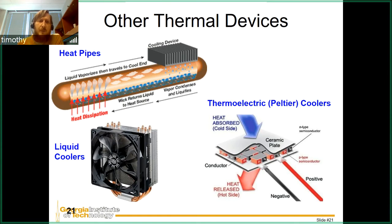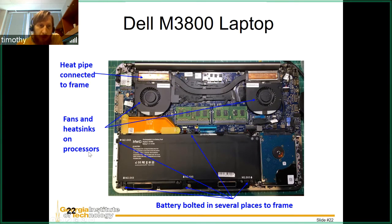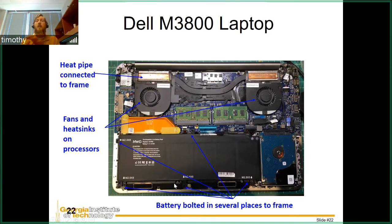Here's an example of these devices used together — a Dell laptop. A heat pipe is connected to the frame, with fans pulling heat into the heat pipe. The battery is bolted to the frame in many more places than strictly necessary, creating a hard thermal connection and providing an additional thermal path.